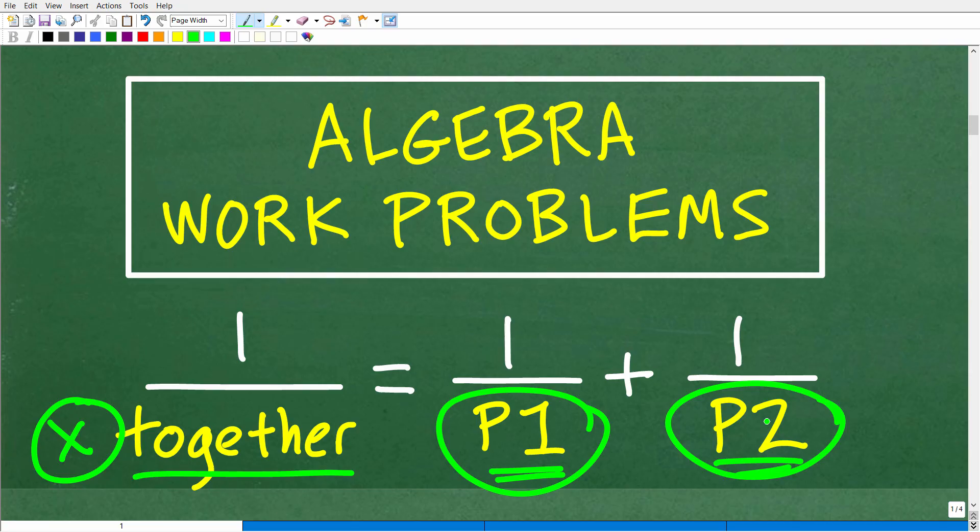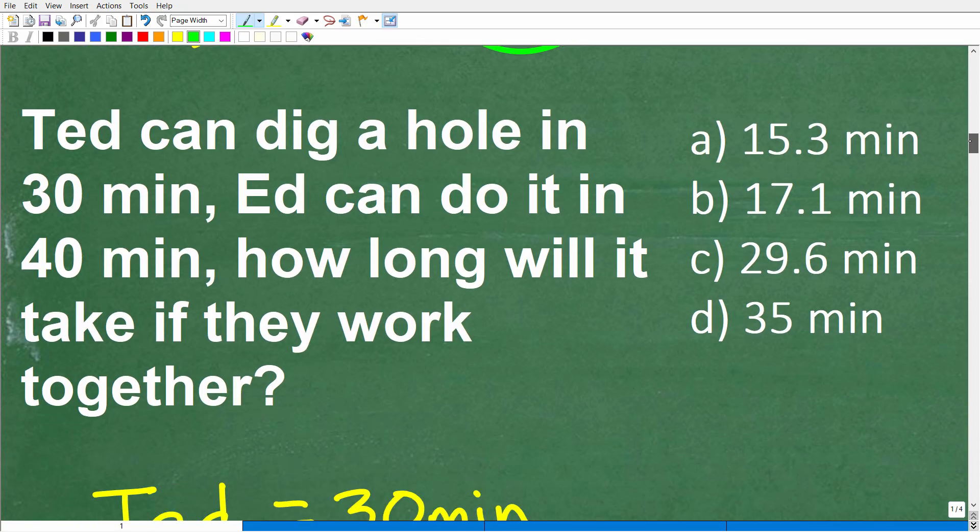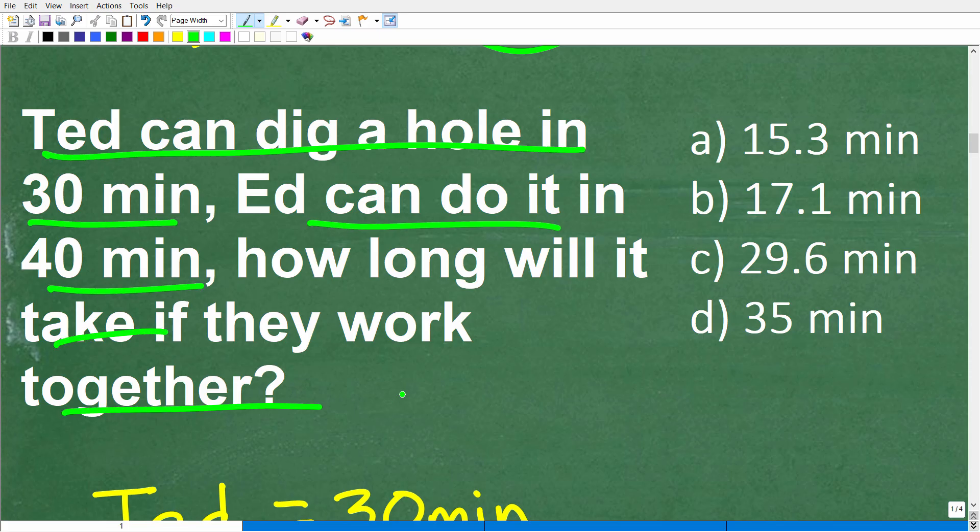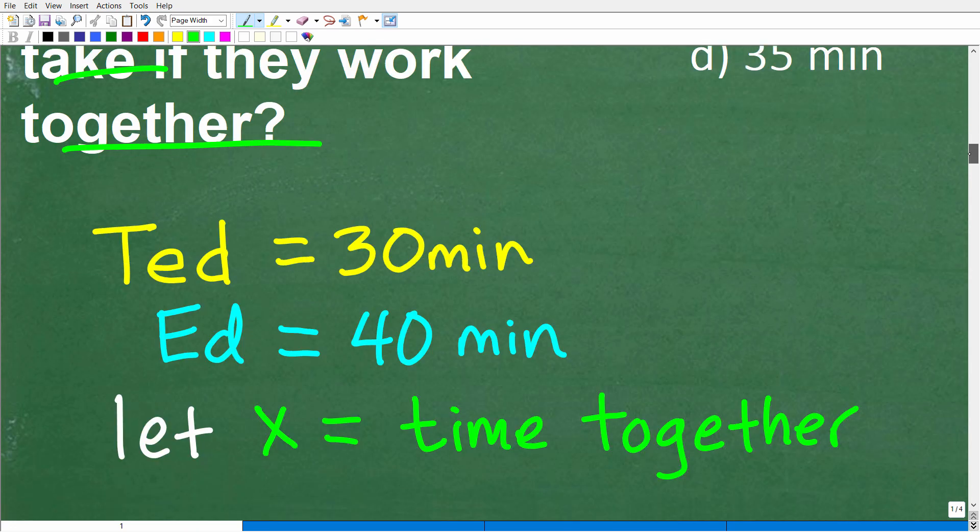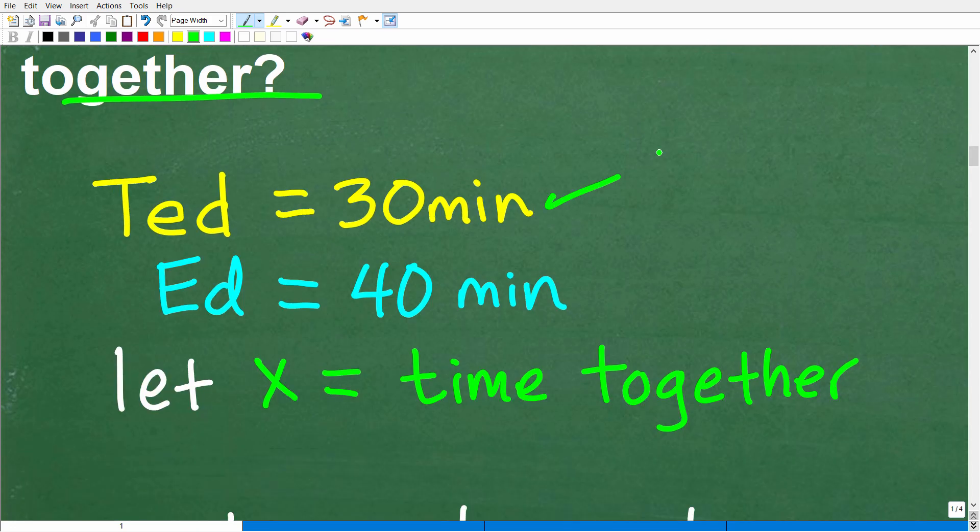If you understand this, then basically we can just build a lovely equation here. Ted can dig this hole in 30 minutes and Ed can do it in 40 minutes. How long will it take them to do this together? Here again, we have Ted equals 30 minutes, Ed equals 40 minutes in terms of how much time it takes them to do this work. So let's let X equal the time it will take them working together.